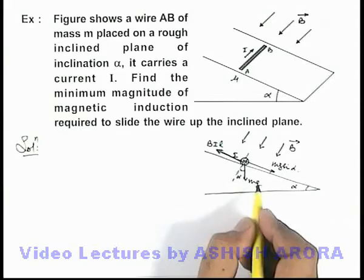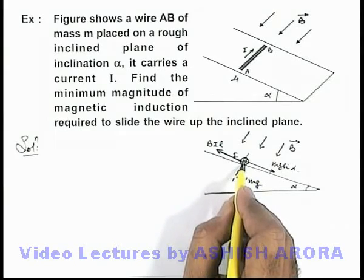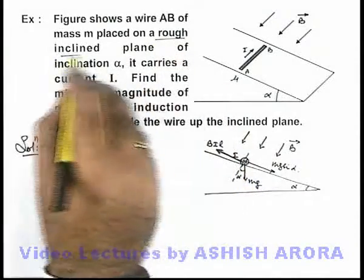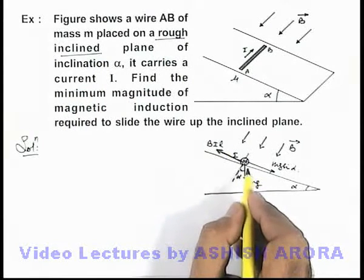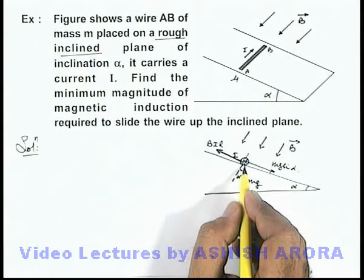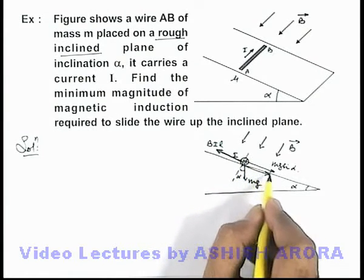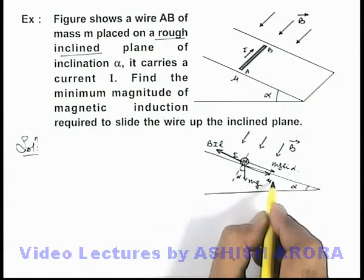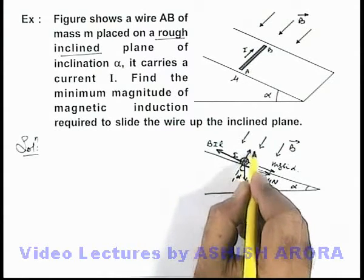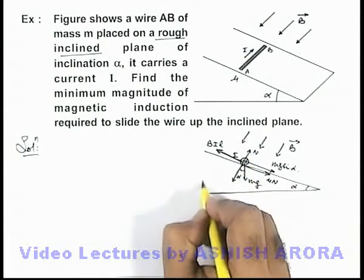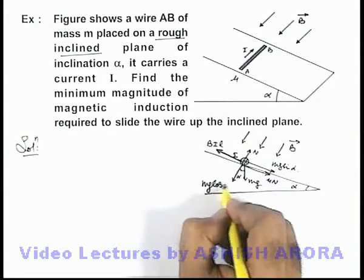Due to the friction on the inclined plane, as it is given that it is a rough inclined plane, if we consider μ as the friction coefficient, here we can write in the downward direction it will experience the friction as μN, which can be given by, if N is the normal reaction, as the normal component of gravity, that is mg cos α.